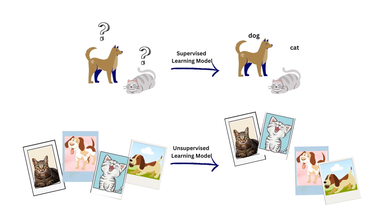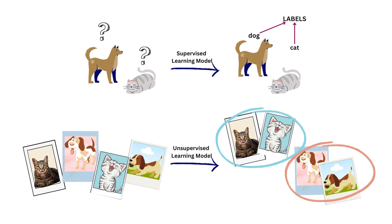Remember our supervised learning video? We learned that supervised learning works on labelled datasets and finds labels for new data. It works in the presence of a supervisor. But unsupervised learning works on unlabeled data and finds similarities among data points without a supervisor. As shown here, the supervised learning algorithm is classifying images as either cat or dog, while our unsupervised learning algorithm is grouping similar images together.